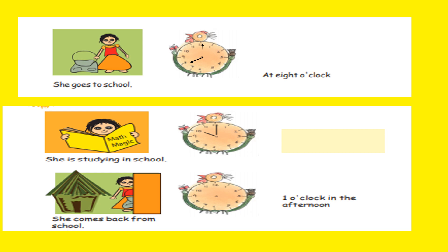She is studying in school and the time shown on the clock is 10 o'clock, so we write 10 o'clock in the morning. She comes back from school and the time given is 1 o'clock in the afternoon, so the hour hand will point at 1 and the minute hand will point at 12.